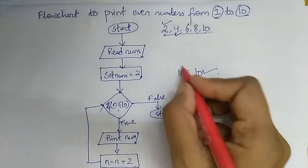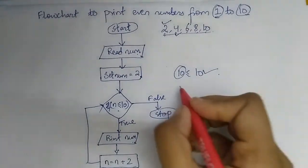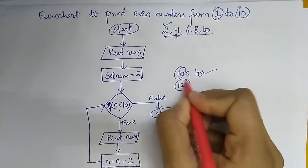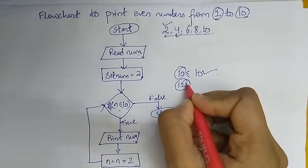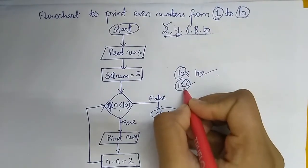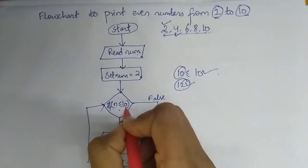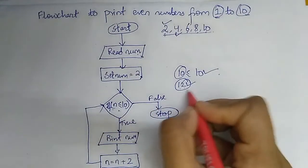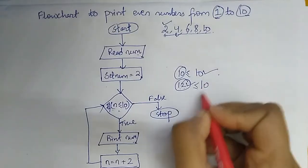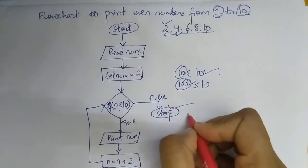Finally, the condition is true for 10, so it prints 10 and increments. The value of num becomes 12, and when the condition is checked, it becomes false because 12 is not less than or equal to 10. So the loop stops here.